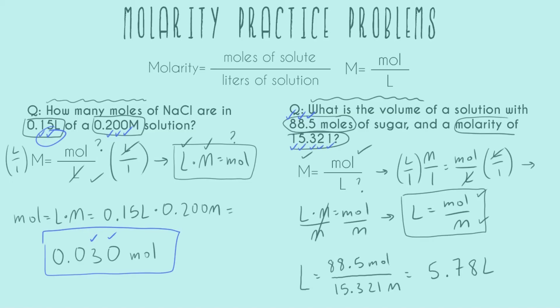I had one, two, three for my number of moles, one, two, three, four, five for my molarity, and that's why I'm only allowed to show one, two, three for my final volume. So 5.78 liters is my final answer.